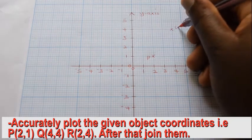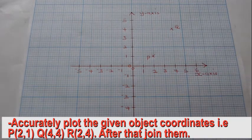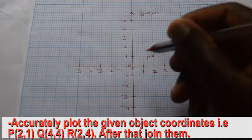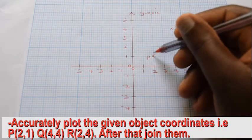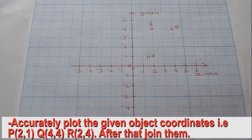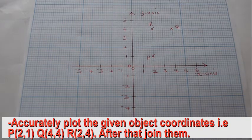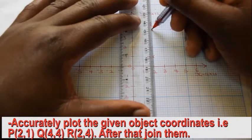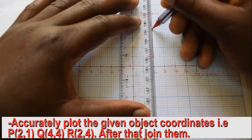For point R, move two steps in the positive direction of the x-axis, followed by four steps in the positive direction of the y-axis. Join the points to form the object shape.